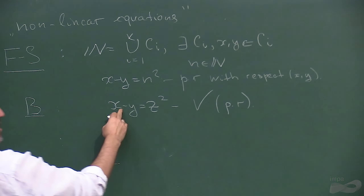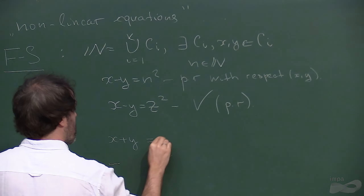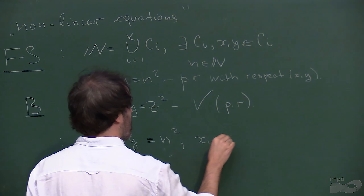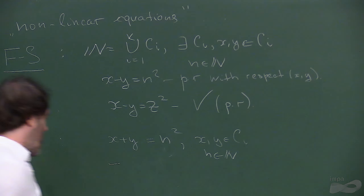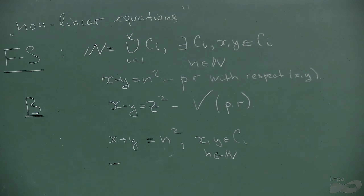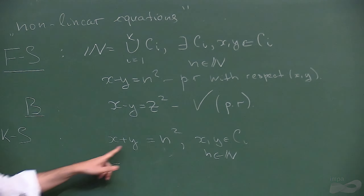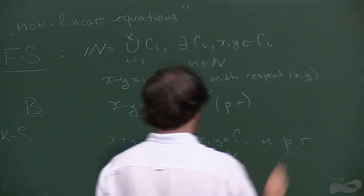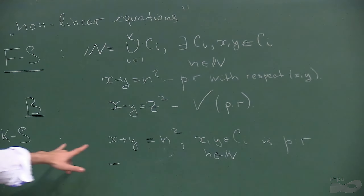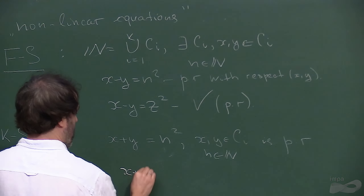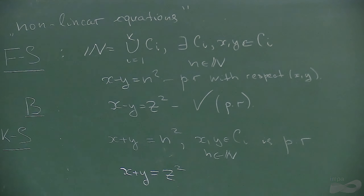What else can we consider? We can put a plus sign and ask: given x + y = n², is this partition regular where x and y are of the same color and n can be anything? This was a well-known question of Erdős from the 70s and 80s. A result in 2000 by Khalfalah and Szemerédi proved that this equation is partition regular — no matter how you divide into k colors, you can always find a sum that adds up to a perfect square.